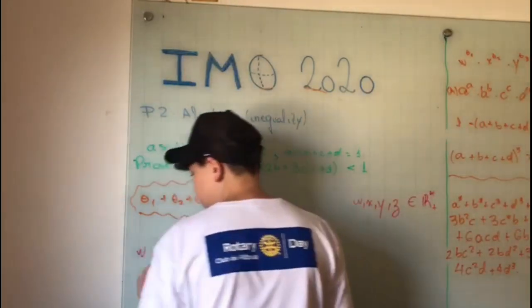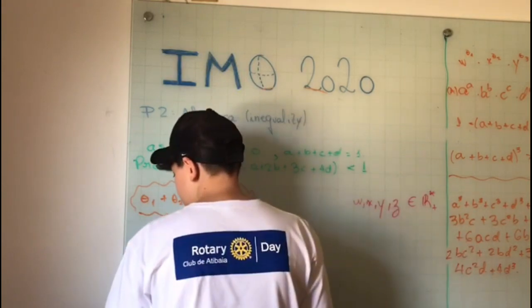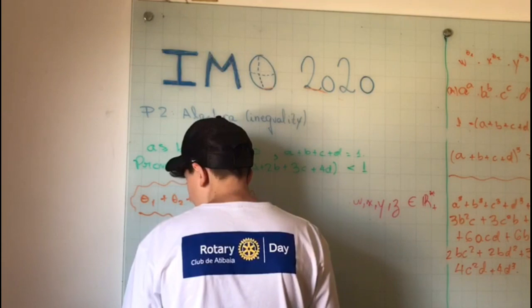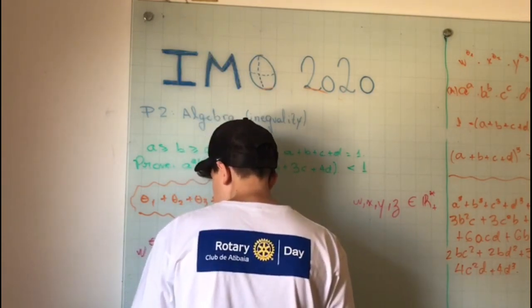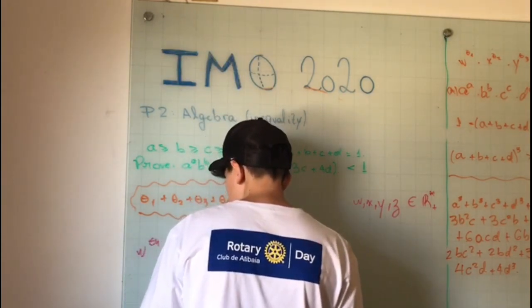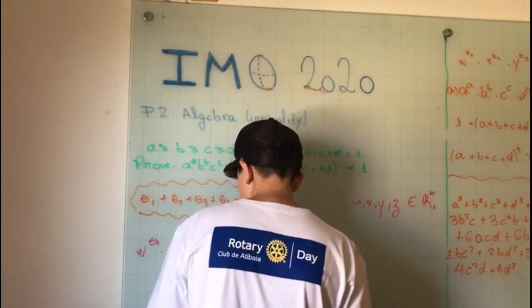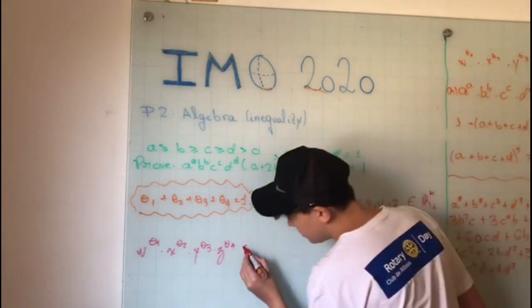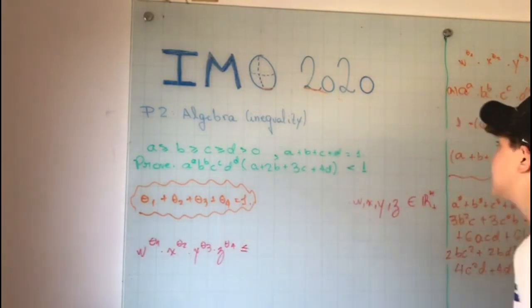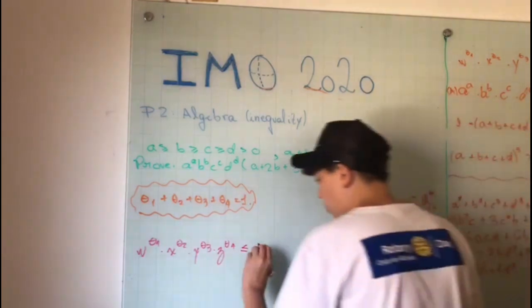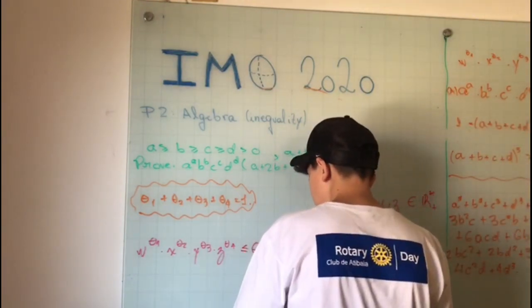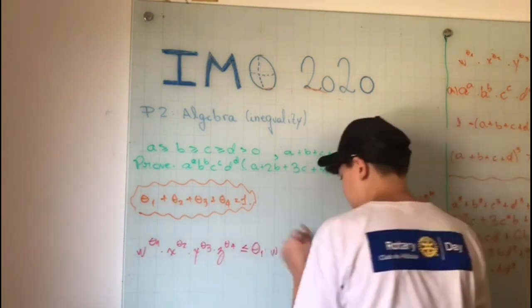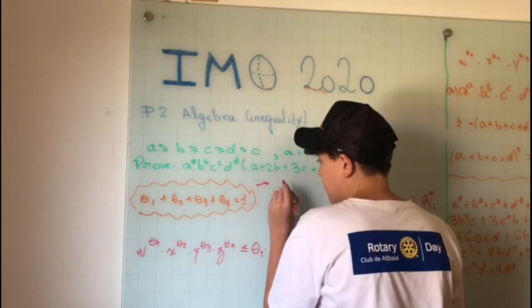We know that w^θ₁ times x^θ₂ times y^θ₃ times z^θ₄ is less than or equal to θ₁ times w plus θ₂ times x, and these have to be positive.